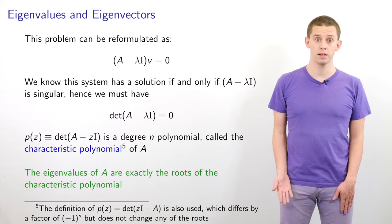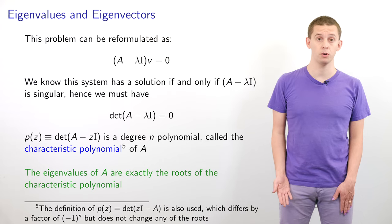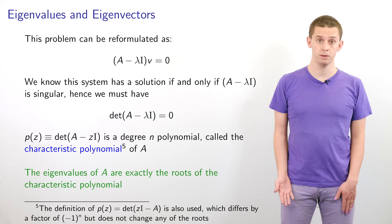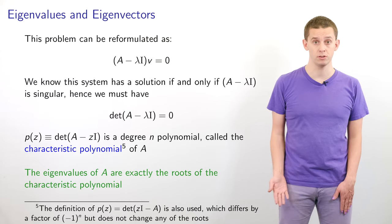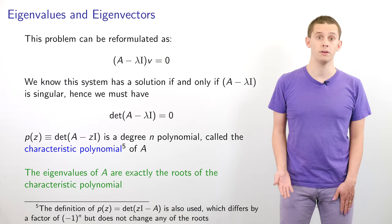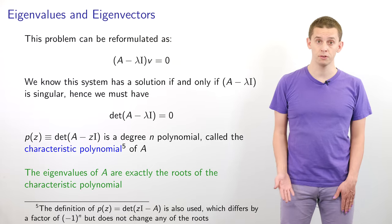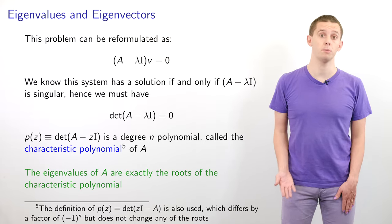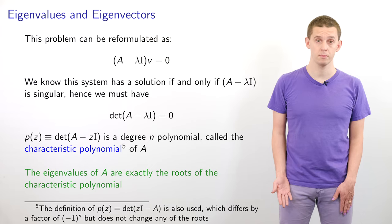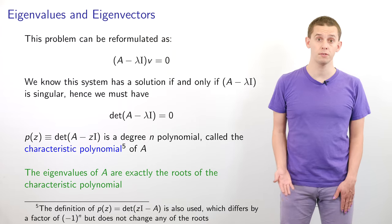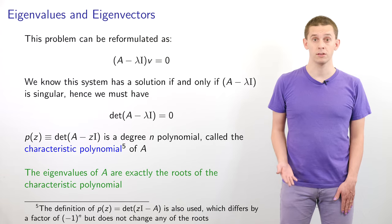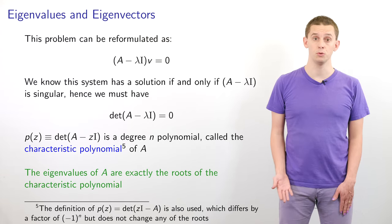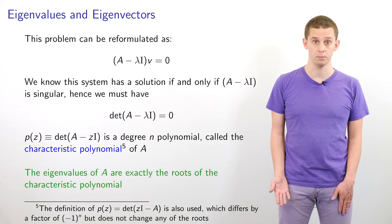Therefore we must have the determinant of A minus lambda I equal to 0. That motivates introducing a polynomial p of z, which is equal to the determinant of A minus z times I. This will be a degree n polynomial, and we refer to this as the characteristic polynomial of A. The eigenvalues of A exactly correspond to the roots of the characteristic polynomial.